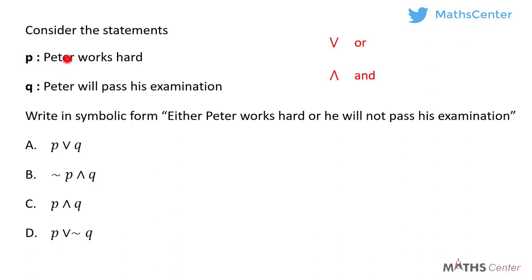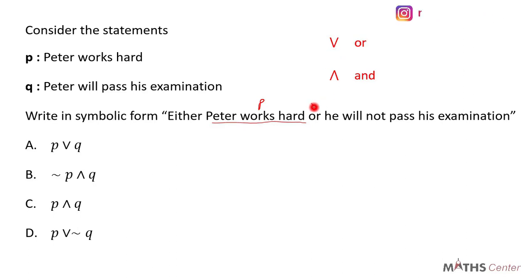We have been given two statements: statement P is Peter works hard, and statement K is Peter will pass his examination. The question wants us to write either Peter works hard or he will not pass his examination in symbolic form. The first part of the statement is Peter works hard, which is given to us as statement P. So we have P OR. Let's consider the second part of the statement.